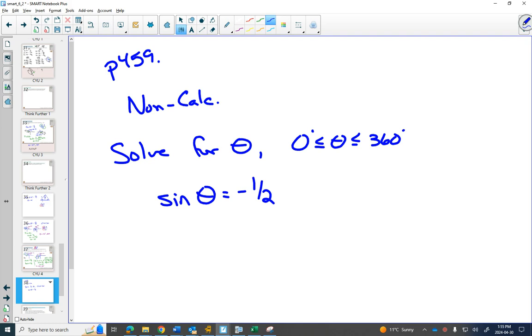We had two special triangles. We had the 45 degree one, where we had 1, 1, and root 2.